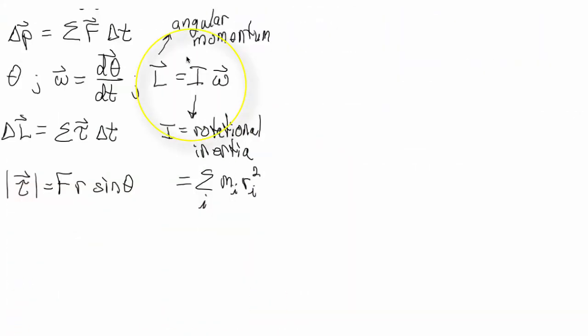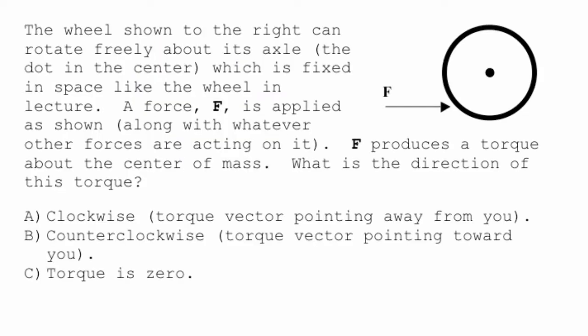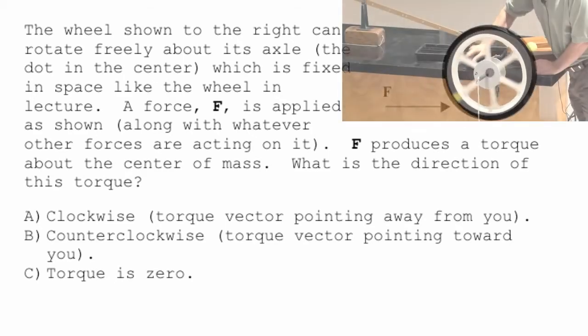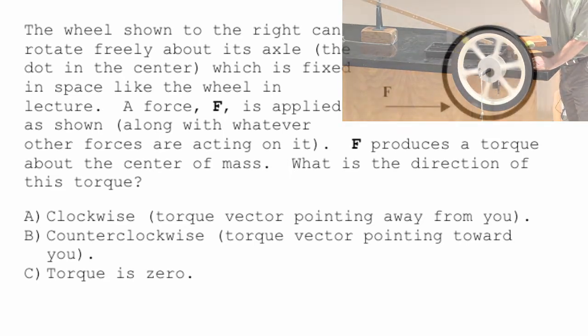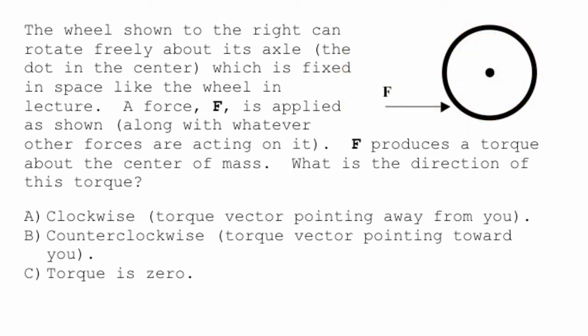The angular momentum definitely depends on the rotational inertia. The wheel to the right can rotate freely about its axle, that's like this one. So it's just like that wheel right there. A force F is applied as shown, along with whatever other forces are acting on it. So I'm only going to ask you about this particular force.